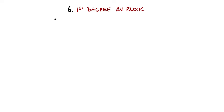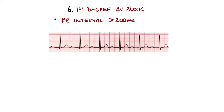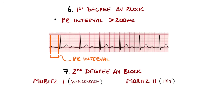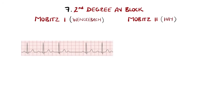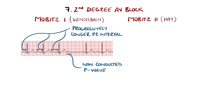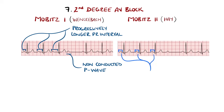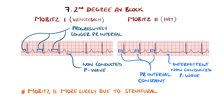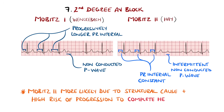Now let's look at the atrioventricular or AV blocks. First degree AV block is due to slowed conduction through the AV node, shown by a prolongation of the PR interval beyond 200 milliseconds — generally a fairly benign finding but can progress to higher degree blocks. Second degree AV block has two main types: Mobitz 1 or Wenckebach, and Mobitz 2 or Hay. Mobitz 1 features a progressive lengthening of the PR interval until there is a non-conducted P wave, then the cycle repeats. Mobitz 2 features a non-conducted P wave with no variation in the PR interval, and is usually due to a structural abnormality considered high risk for progression to third degree, also known as complete, heart block.